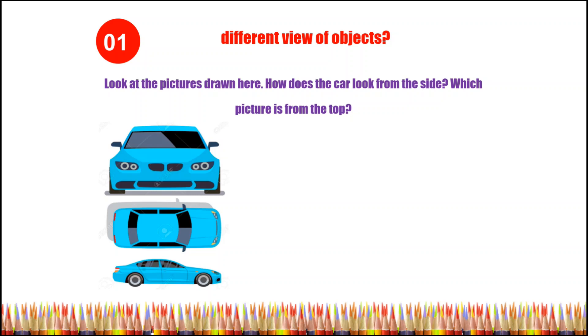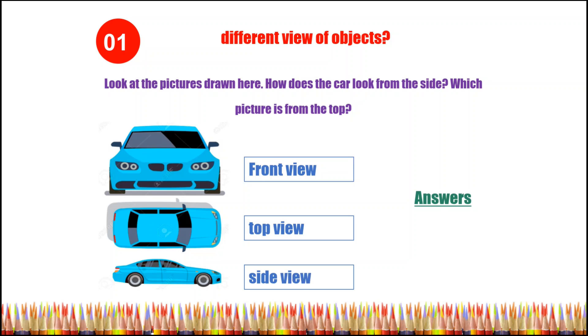Number one: Look at the pictures drawn here. How does the car look from the side? Which picture is from the top? Answers: first one front view, second one top view, and third one side view.